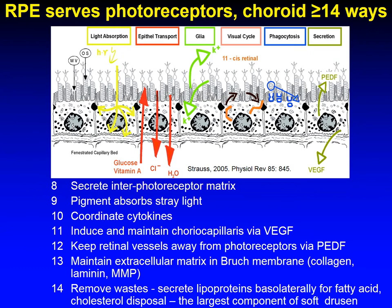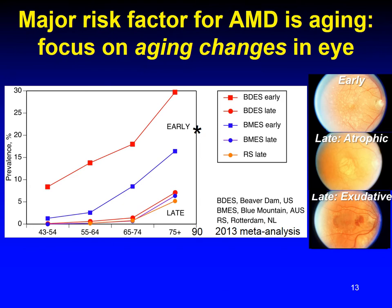The RPE secretes interphotoreceptor matrix, which also maintains attachment. The melanin pigment absorbs stray light. The cells coordinate cytokines, induce and maintain choriocapillaris by way of vascular endothelial growth factor, and keep retinal vessels away from the photoreceptors by way of pigment epithelium-derived factor. It maintains extracellular matrix in Bruch's membrane and removes waste. It secretes lipoproteins basolaterally for fatty acid and cholesterol disposal, which is the largest component of soft drusen. The largest risk factor for all forms of AMD is aging.